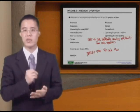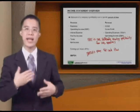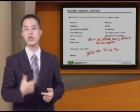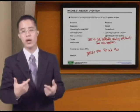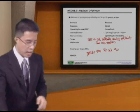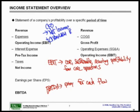EBITDA is a Proxy for Cash Flow. The question is: why make up a term and proxy for cash flow when we could go to the cash flow statement and grab the Cash Flow from Operating Activities number? Cash Flow from Operations, or CFO, starts with net income using the indirect method — net income plus non-cash items, of which D&A is the biggest amount — which gives us EBITDA, plus or minus change in working capital.